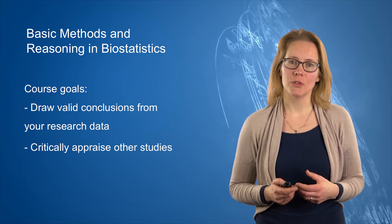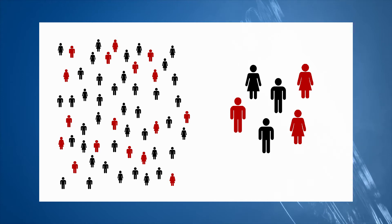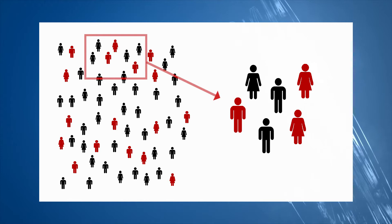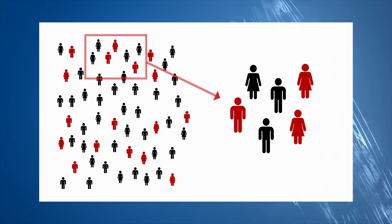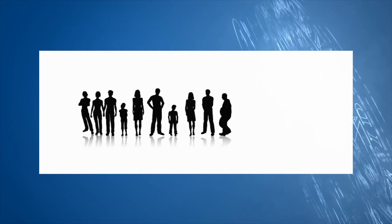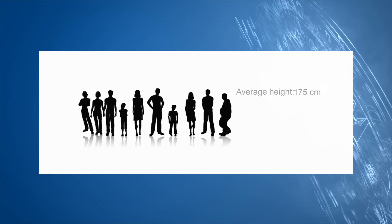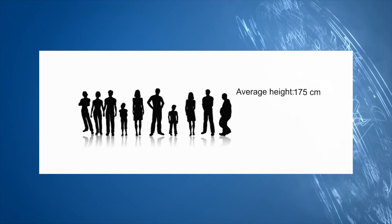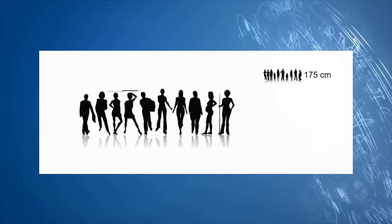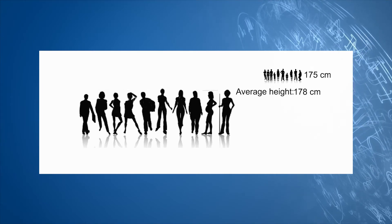Let me shortly introduce you to our main topics. The first reason why study data may not reflect the truth is the simple fact that one study can only measure one sample. We never have the means to measure the total population about which we want to make the statement. If another researcher would perform exactly the same study as you did, but on a different sample of patients, or mice, or blood samples, or whatever you are studying, he or she will find a different result, just due to chance alone.